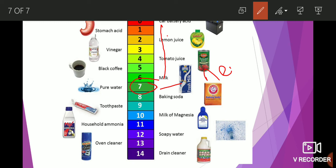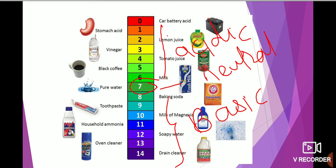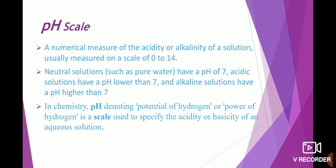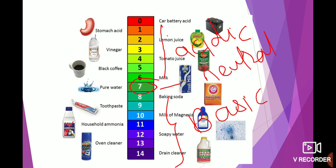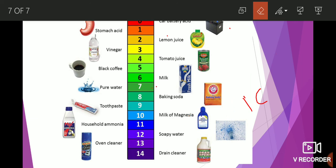Exact pH 7 is neutral, pH between 0 to 7 is acidic, and greater than 7 is basic in nature. In chemistry, pH stands for potential of hydrogen or power of hydrogen, and it is a scale used to specify the acidity or basicity of an aqueous solution. We can use this pH scale to measure acidity and basicity.